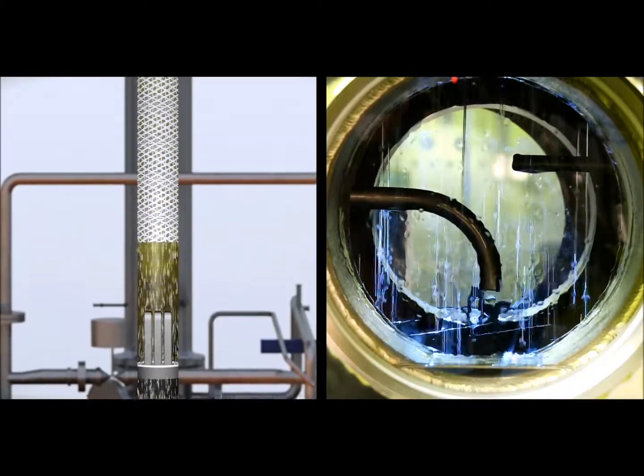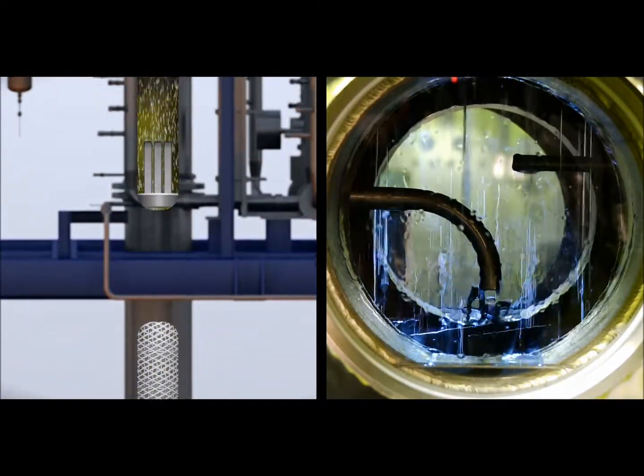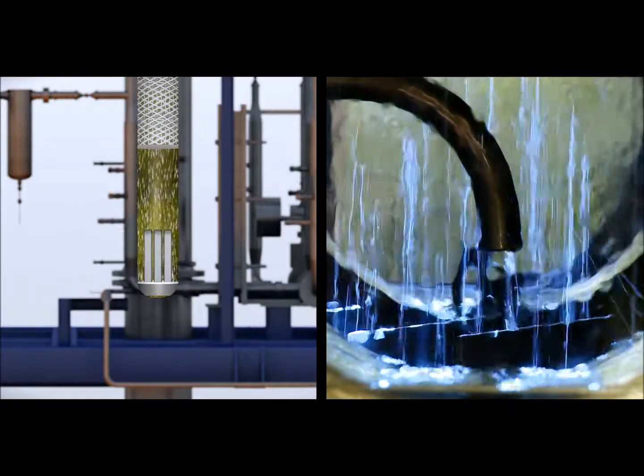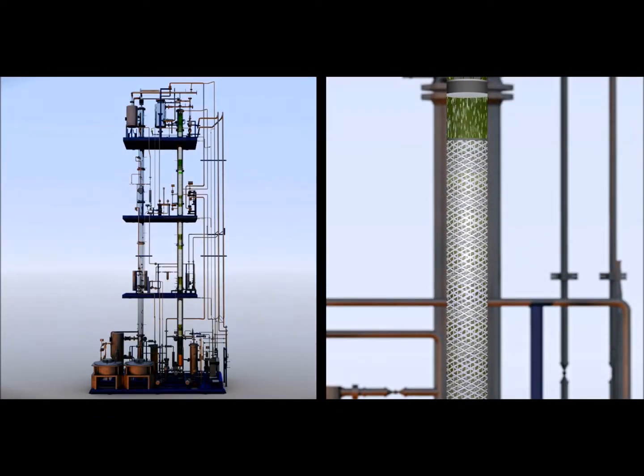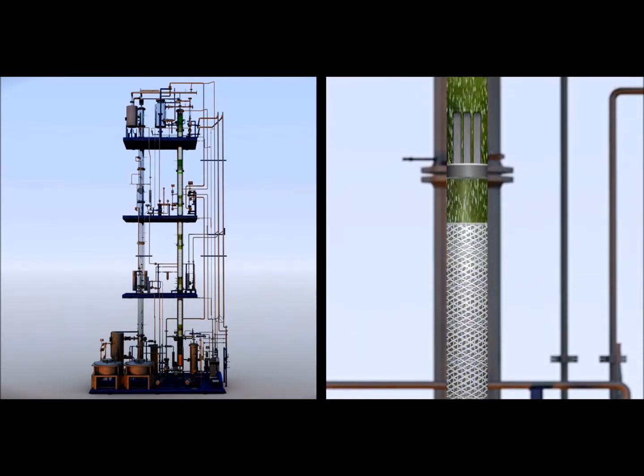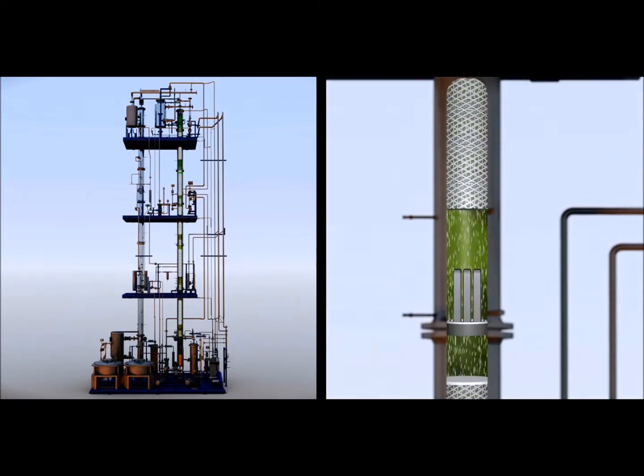As the gas rises up the tower, the MEA solution flows down from the top. Along the way, the solution passes over these metal structures called packing that slows the liquid down and spreads it out, maximizing the surface area in which the gas can react with the MEA.